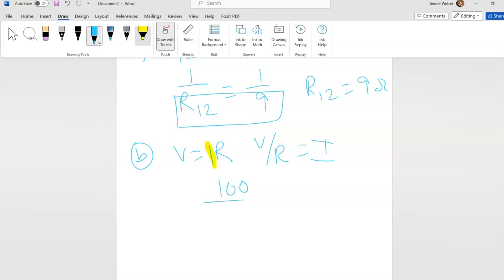So the voltage was given in the problem. The voltage of the whole circuit is 100 volts, right? So this is 100 divided by my total resistance which I just found which equals 25.